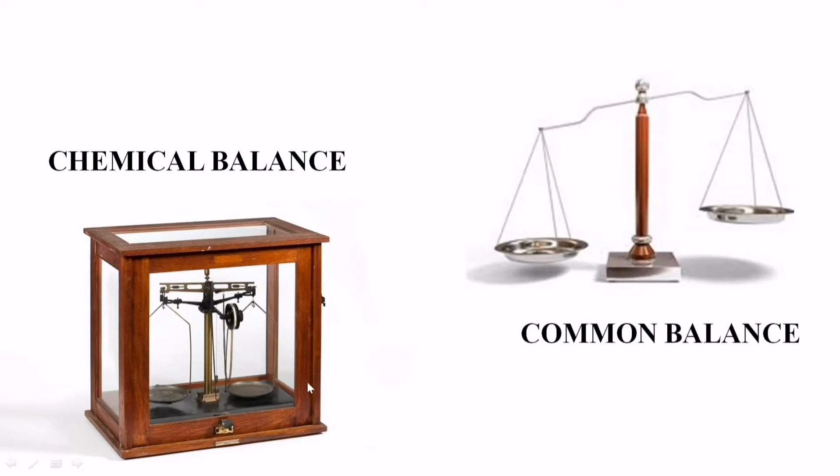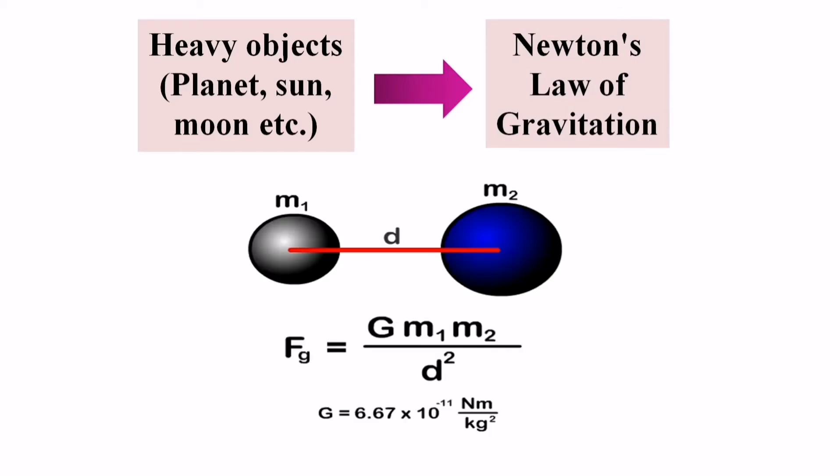But if we want to measure very heavy objects, we cannot use these balances, right? Let's say, for example, the mass of earth or moon or sun. So for these kind of measurements we make use of Newton's law of gravitation. How? Let's see. According to Newton's law of gravitation, any two objects in the universe will attract each other with a force that is proportional directly to the product of their masses and inversely to the square of distance between them. So here, if you know the mass M1 and you know the force F and you know the distance using maybe parallax method like we discussed earlier, since capital G is constant, you can easily find M2, right?